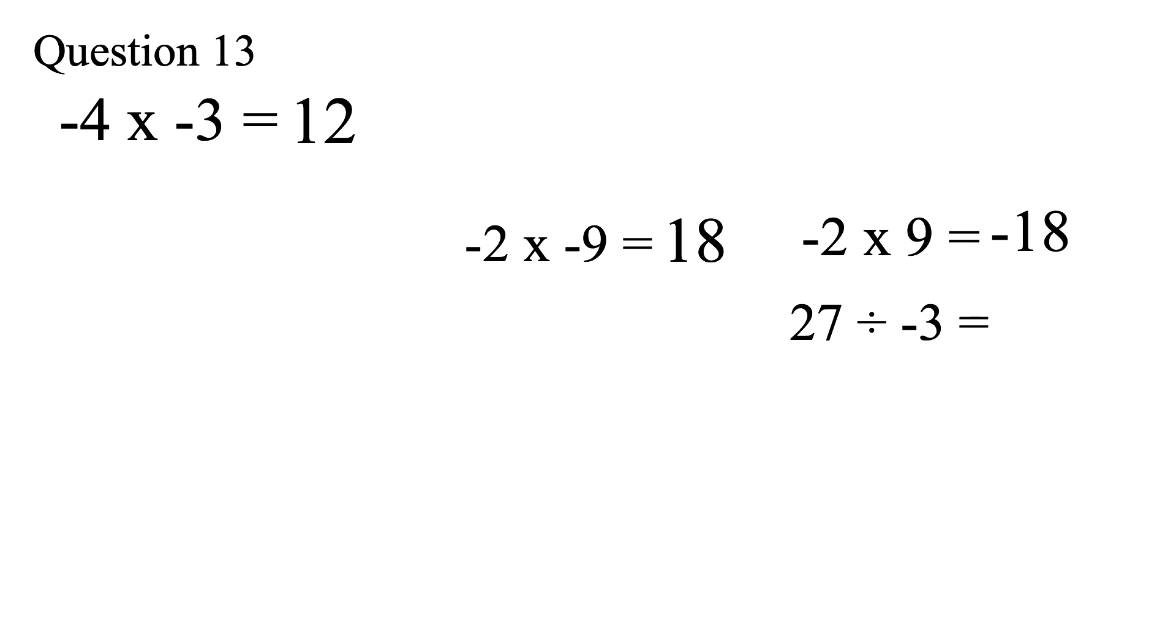This idea is the same for division. So 27 divided by negative 3 will be negative 9 because one of the values is negative and the other is positive.